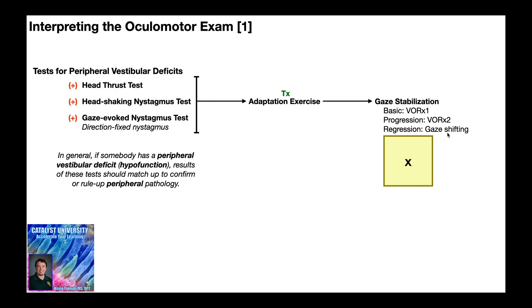The second case where gaze shifting is given is when the person has such impaired gaze stabilization that they cannot keep that visual target — the X — in focus during the VOR times one, even at slow rates. So you have to regress it to gaze shifting. We'll talk about all those in the next two videos.